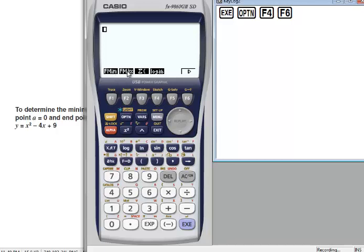If I want the maximum value I will press F2. I'll press F1. I will write the function x² minus 4x plus 9.